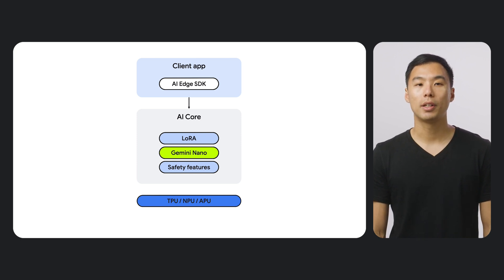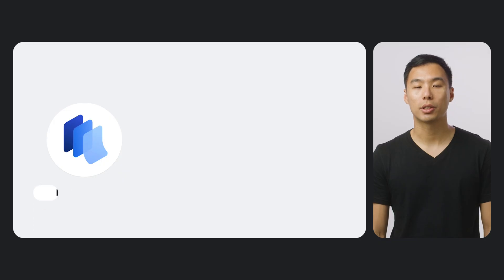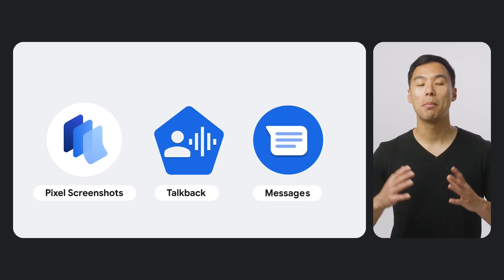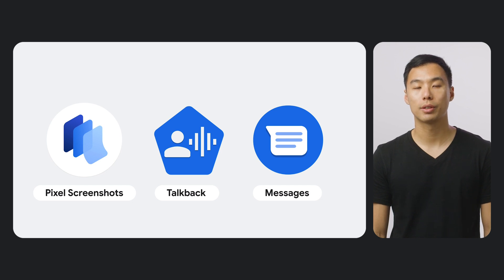Another benefit of Gemini Nano is that it's distributed as a system service, so users don't have to repeatedly download it for each app that uses it. Gemini Nano is already transforming key Google apps. To date, Pixel Screenshots, TalkBack, Messages, and many more have leveraged Gemini Nano to deliver delightful generative AI features for their users.